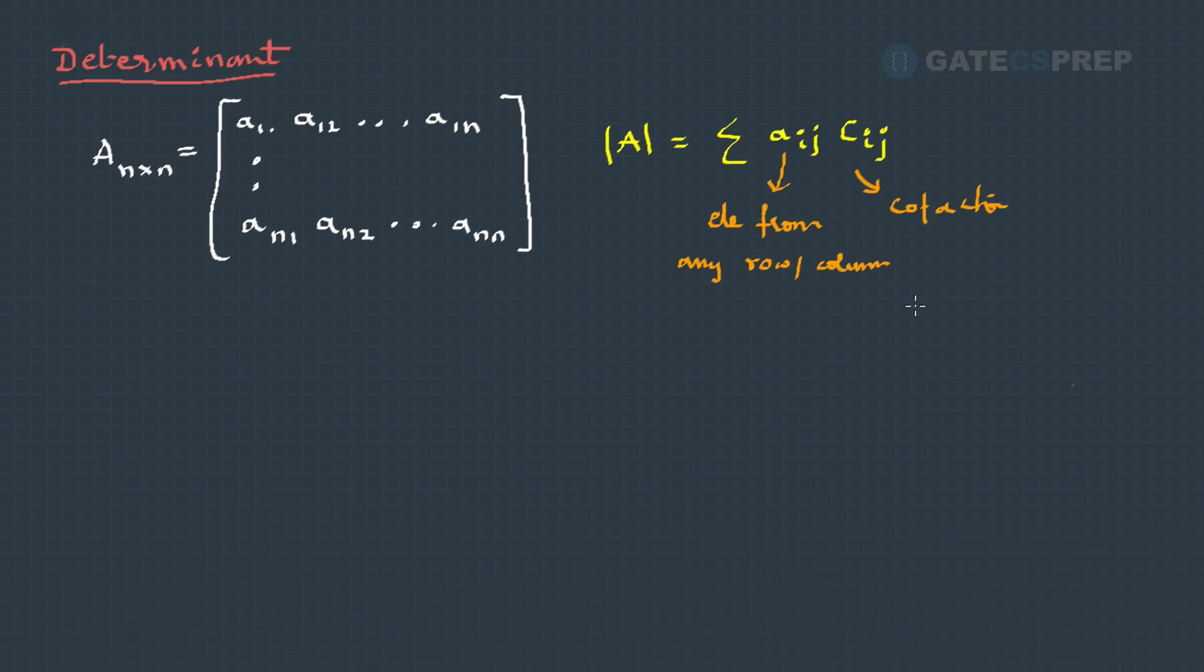It might look somewhat complicated, so let me give you an example to make it simpler. Here we have a matrix of order 3. Now to find the determinant of this, I can pick up any row, so let me take the first row.